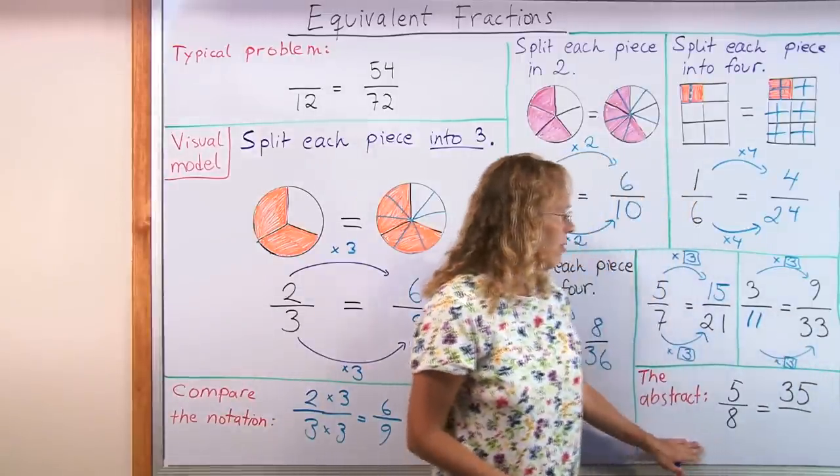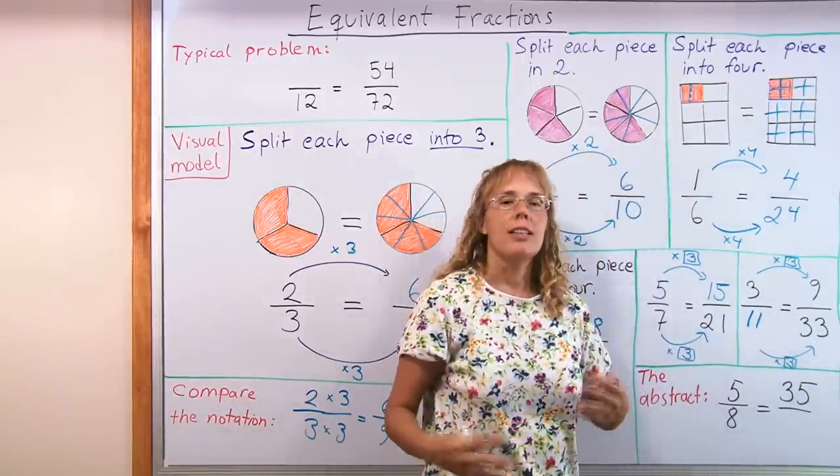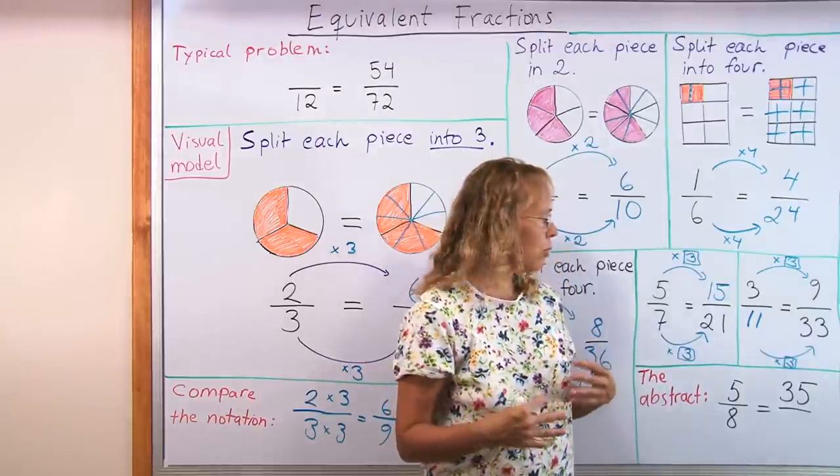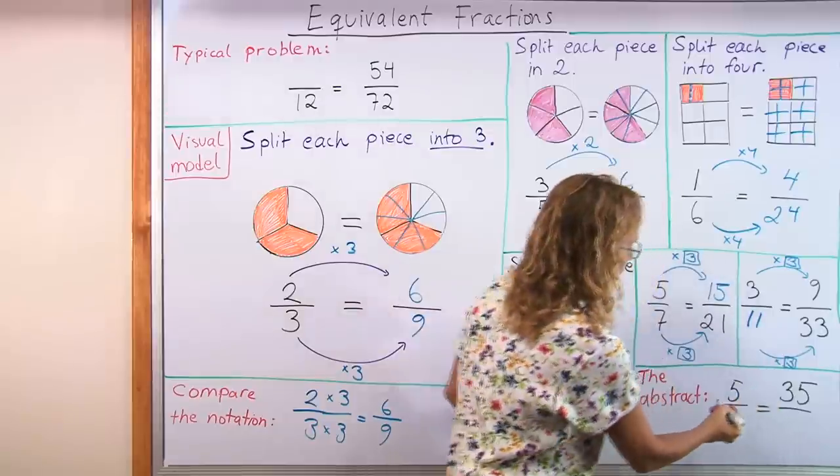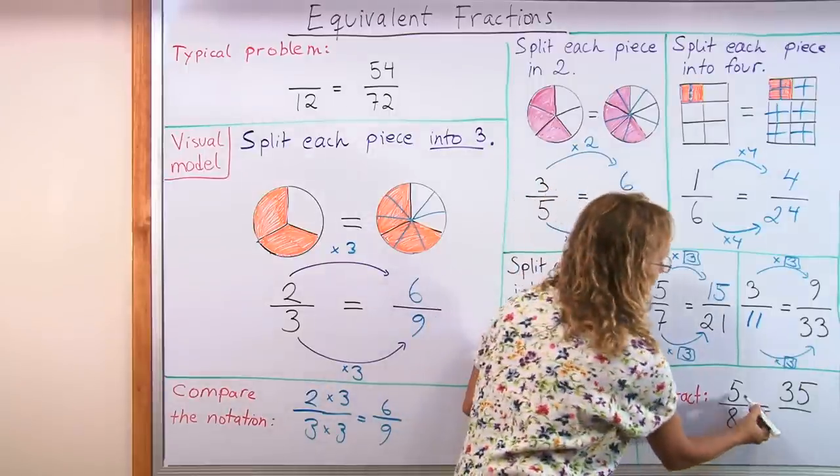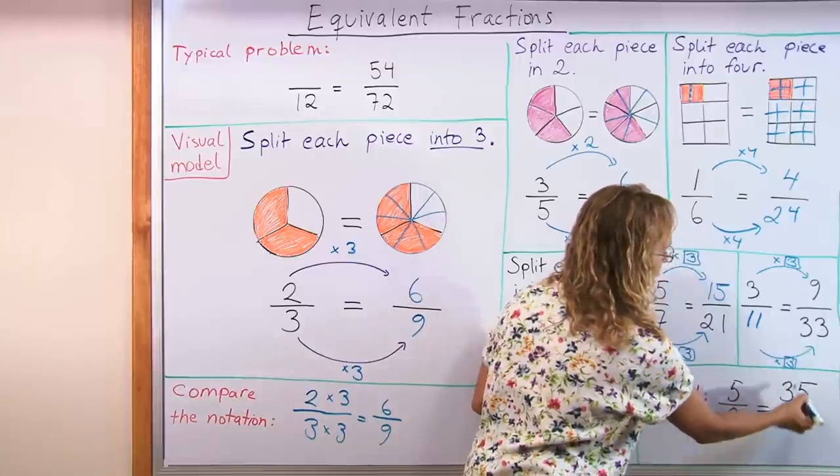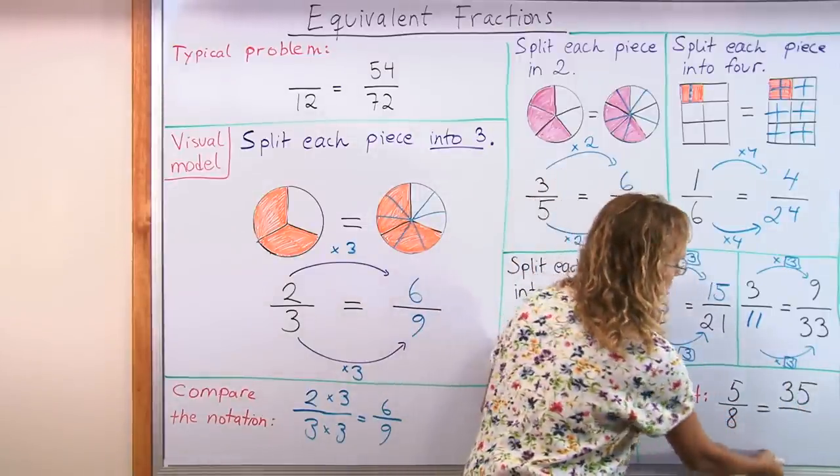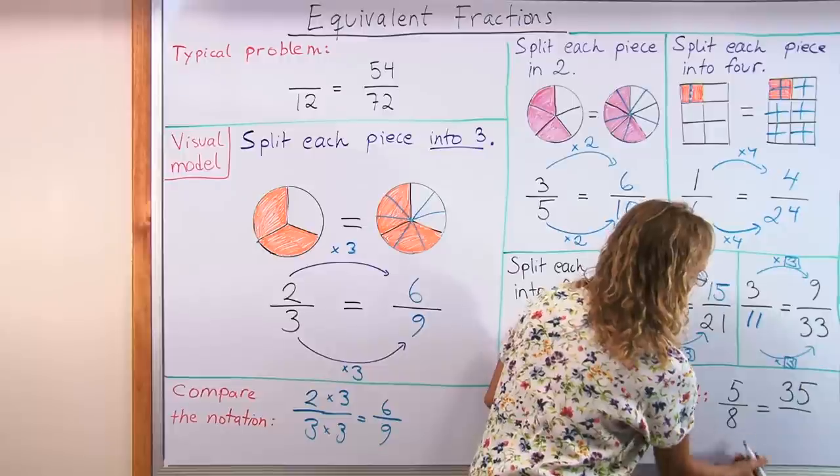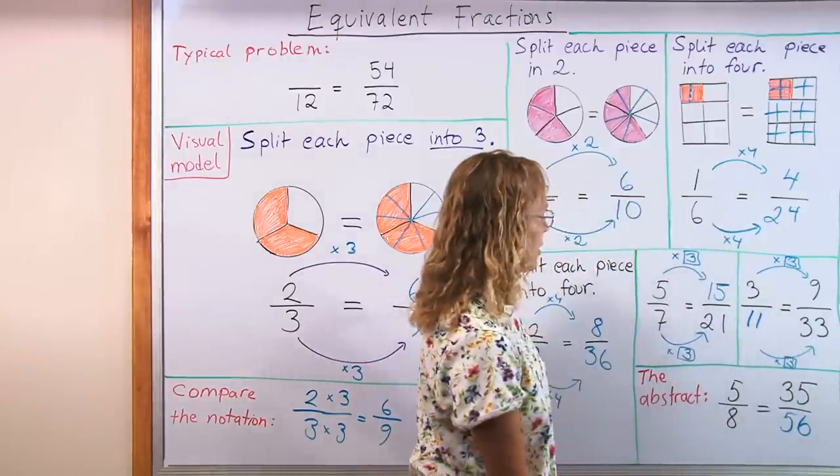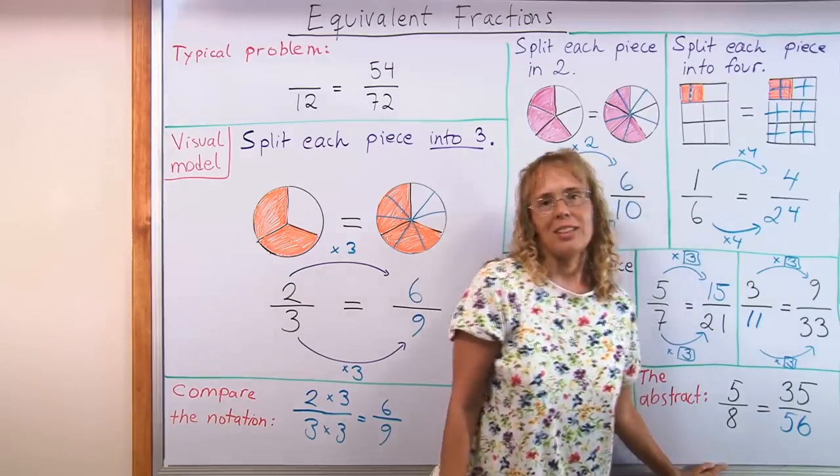And then finally they have now arrived at the abstract form of these equivalent fraction problems and they can now do all the thinking themselves. Think through the arrows and maybe not have to draw the arrows anymore. Just think 5 times something is 35. It is 5 times 7. Therefore this number also times 7. 8 times 7 is 56. And that way equivalent fractions won't be any more intimidating to students.